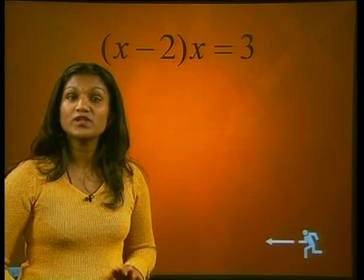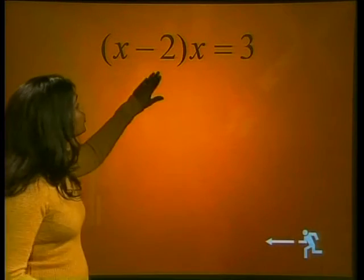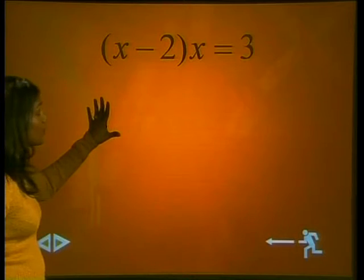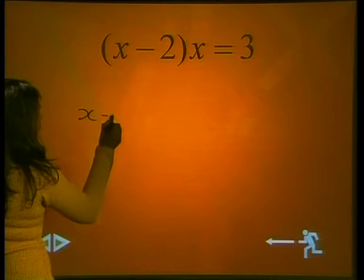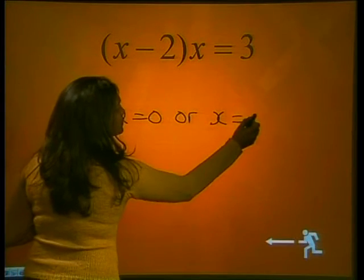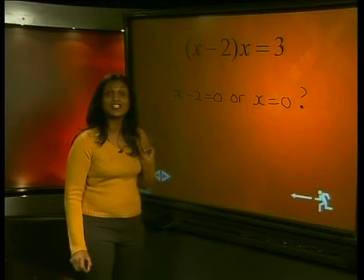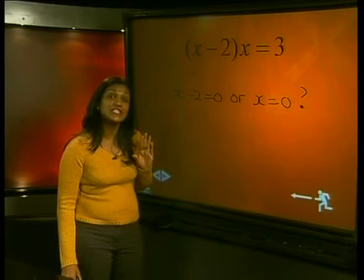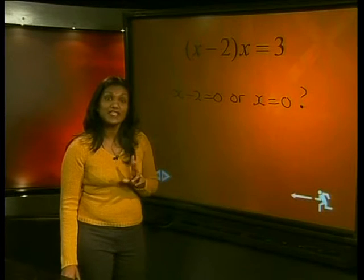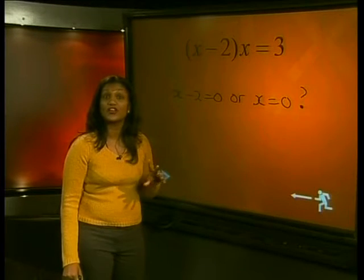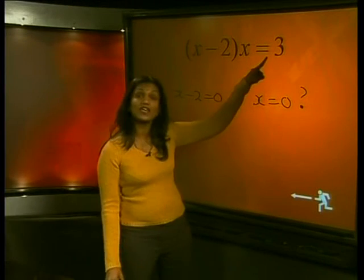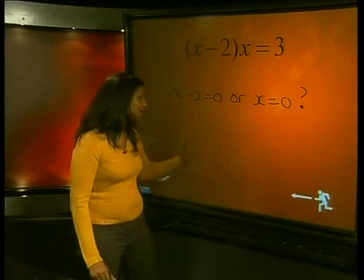Now let's solve the other quadratic equation we looked at earlier: x minus 2 multiplied by x equals 3. Can we say x minus 2 equals 0 or x equals 0? No, that does not make any sense. We can only say one of the factors equals 0 if we have a 0 on one side of the equation. With the 3 on this side, we can't make any claims about 0.